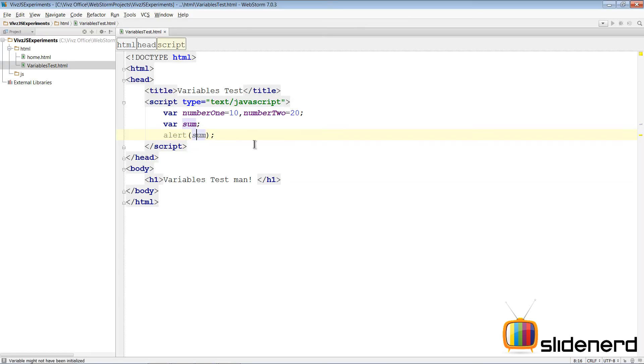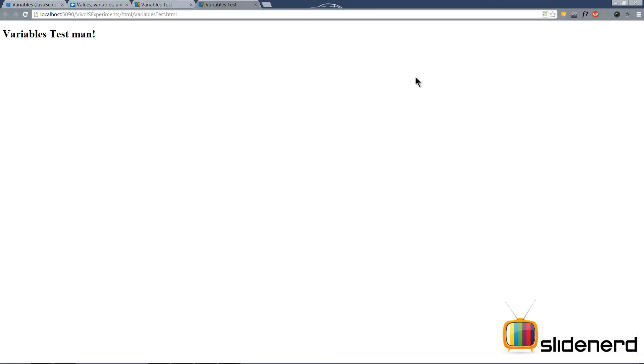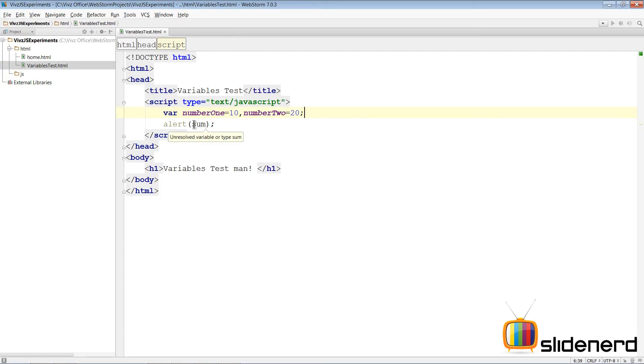Now if you don't write the keyword here and you directly try to put sum, let's take a look at what happens. Go to Chrome, and if you notice the script doesn't run - there is an error because of which the script doesn't run at all. You are supposed to declare this variable before you try to use it. In other words, you have to tell the interpreter to give me some memory for this variable called sum.